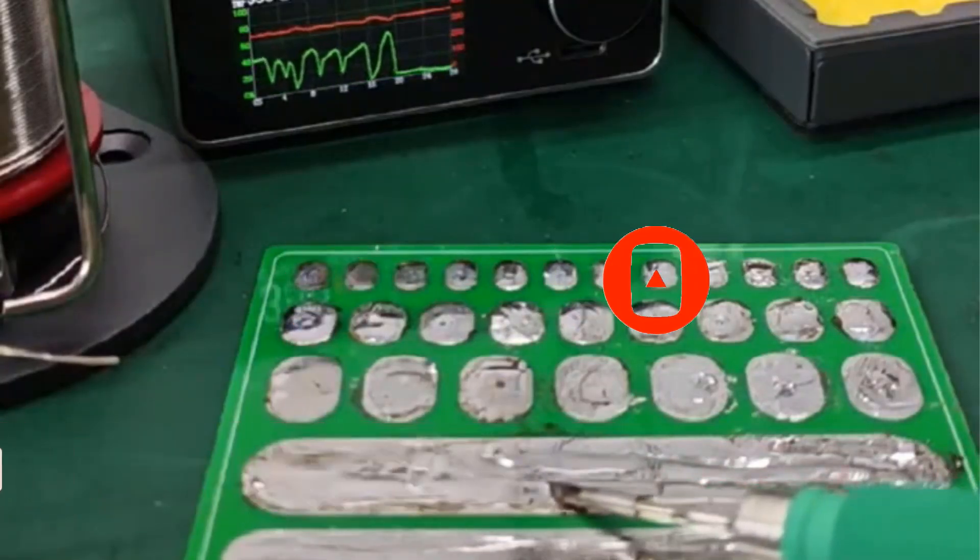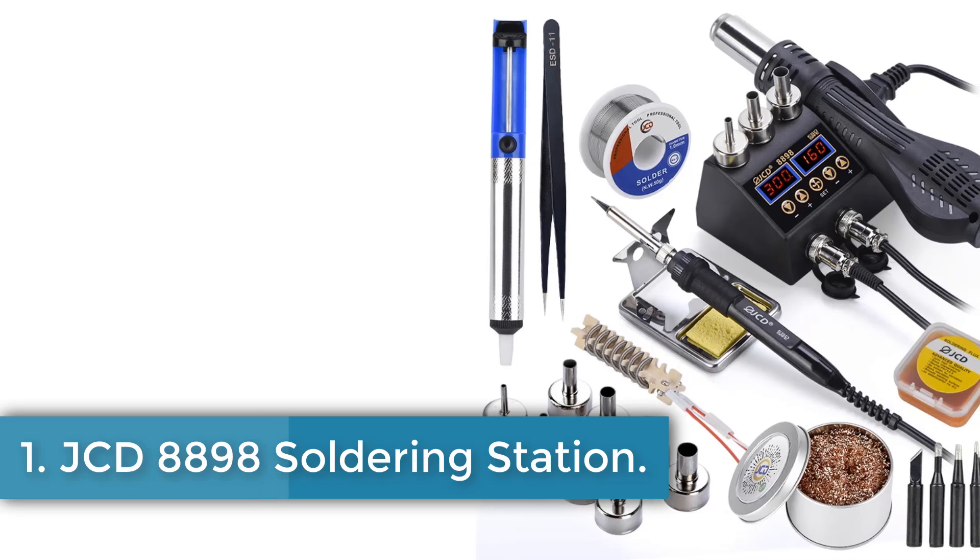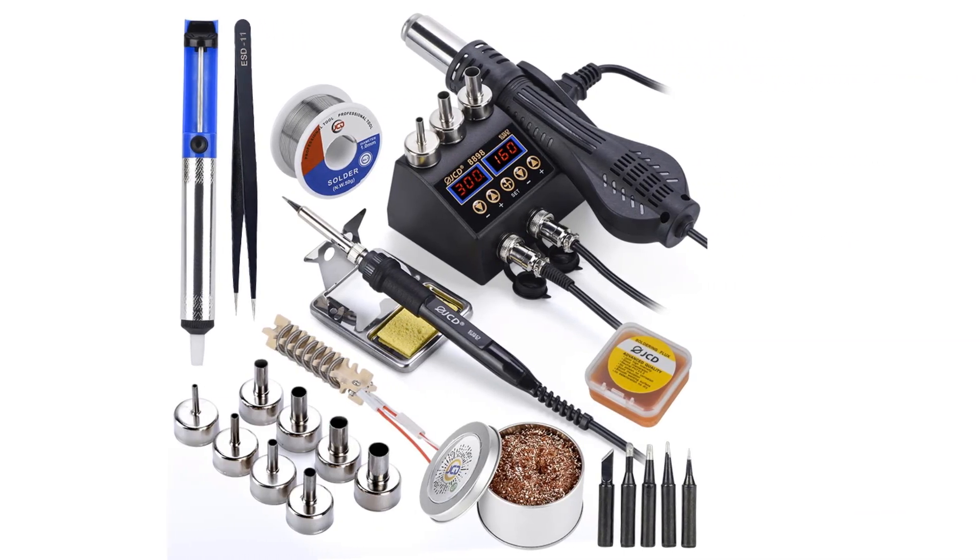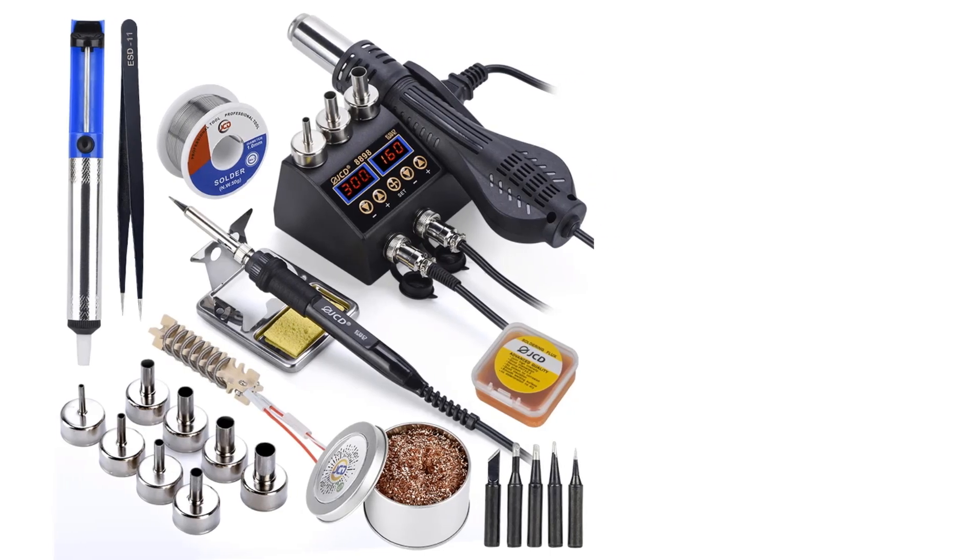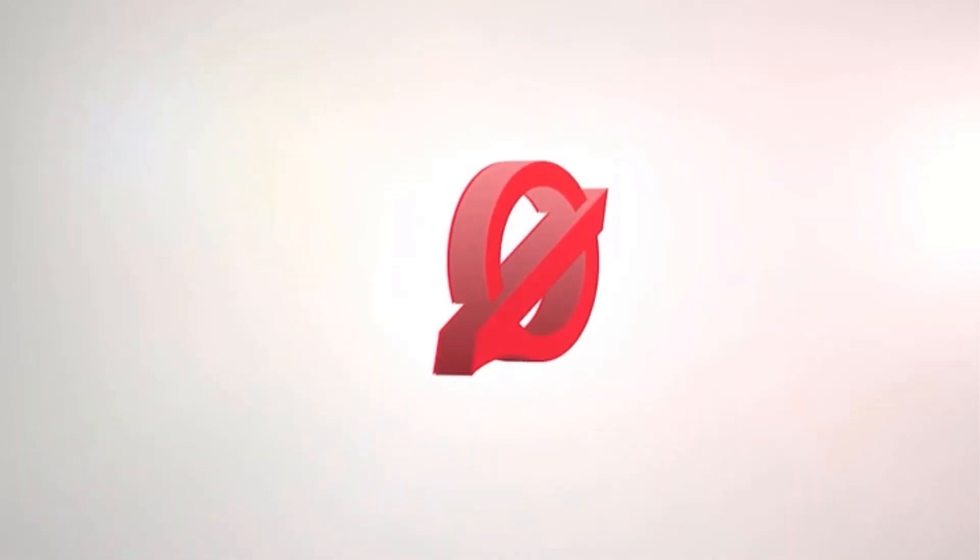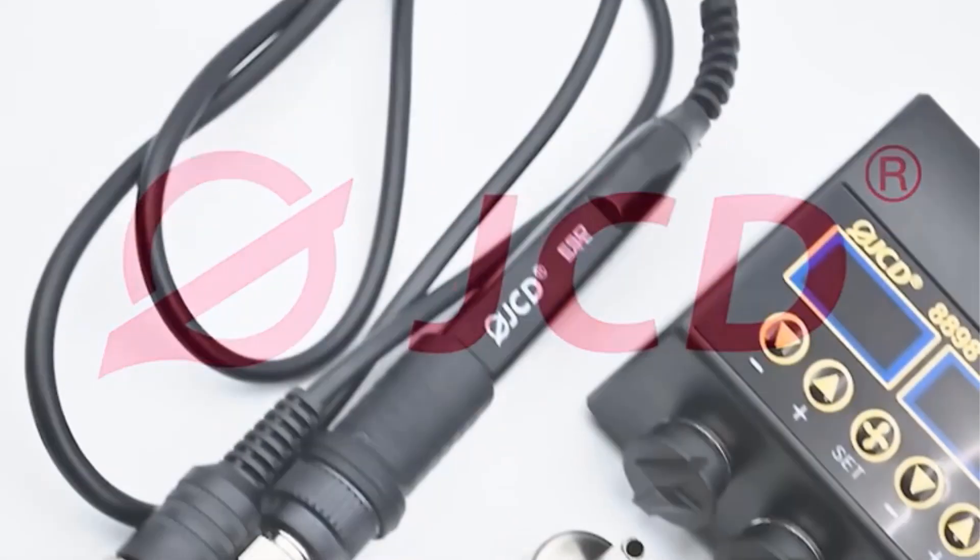Let's dive into the video. Number 1: JCD8898 Soldering Station. The JCD8898 soldering station is a versatile 2-in-1 device designed for precision soldering and rework, particularly suitable for cell phone repairs involving BGA and SMD IC components.